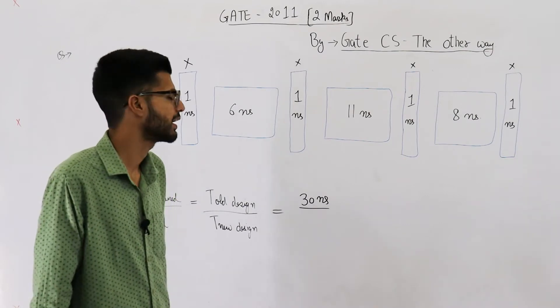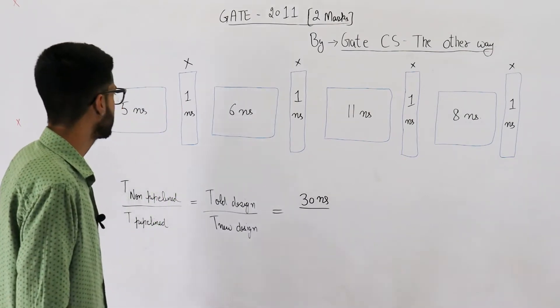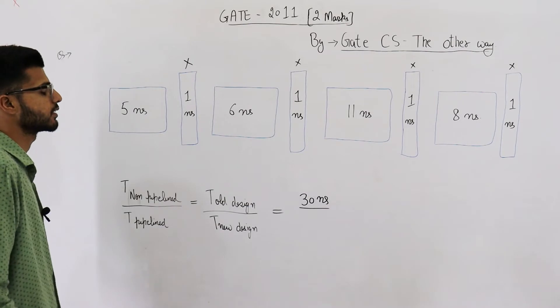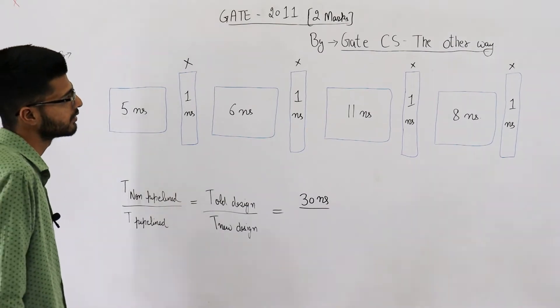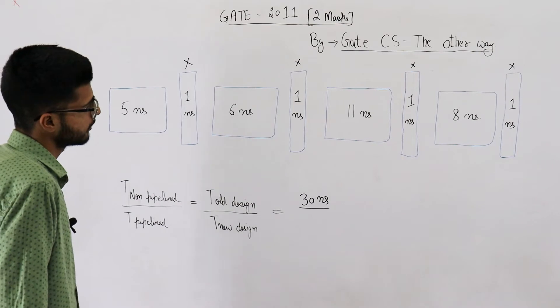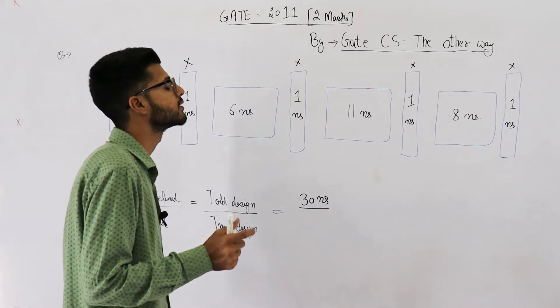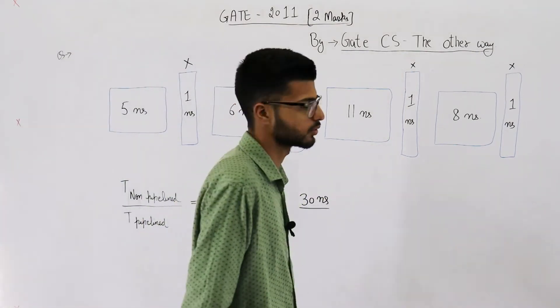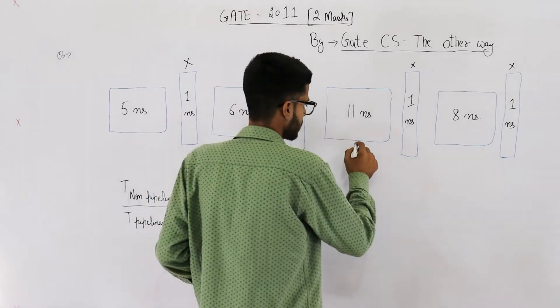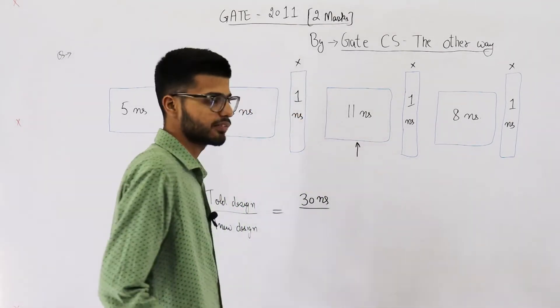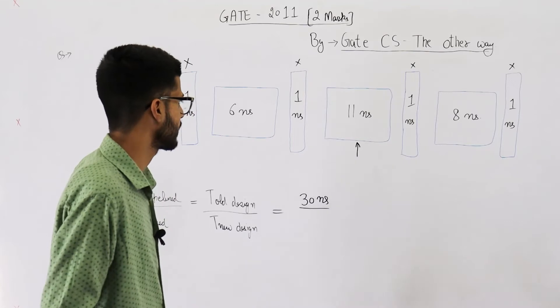But what happens in a pipelined version? In a pipelined version, first let's analyze what is going to be the stage delay. So we are going to take a common stage delay for all the stages, which is the maximum of all these. I've already told the reason multiple times, but still I'm discussing it again.